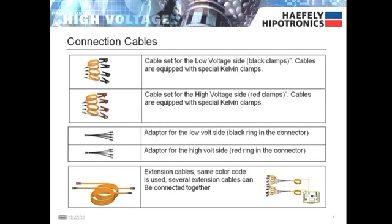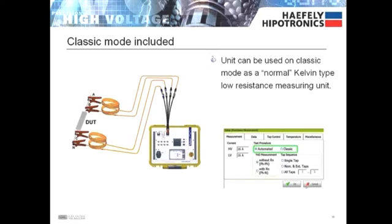The color coding system is defined to ensure an easy and proper test setup. The 2293 can still be used as a traditional low resistance measuring bridge where one or two resistances can be measured using the Kelvin method.